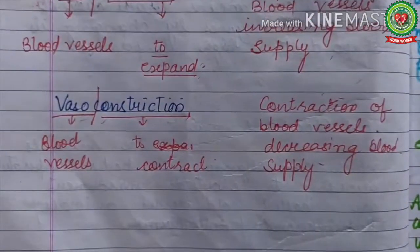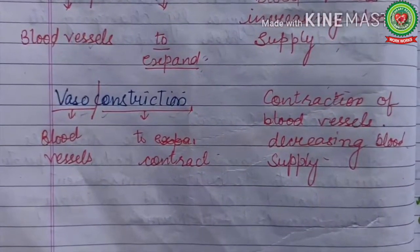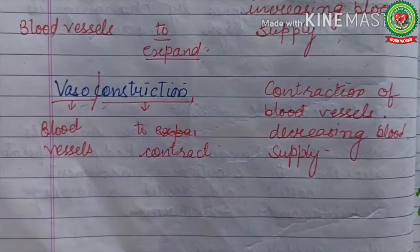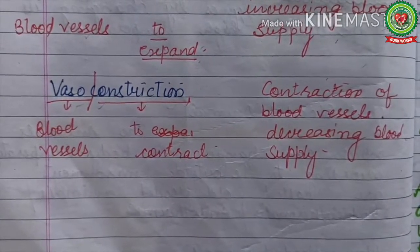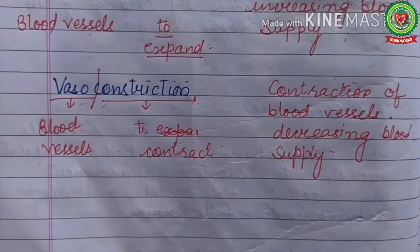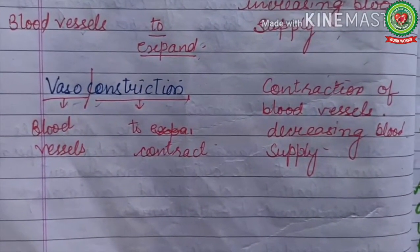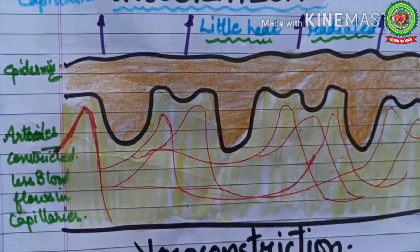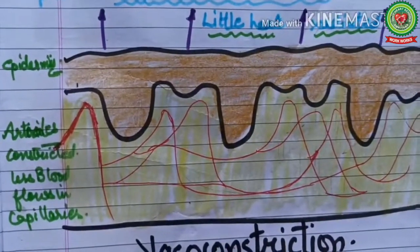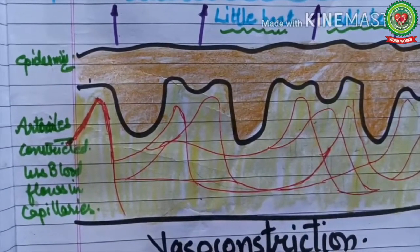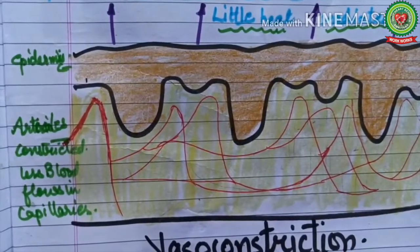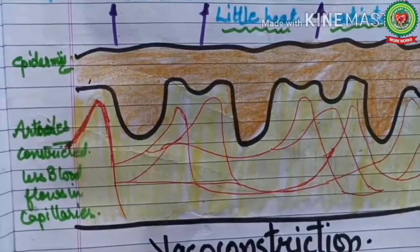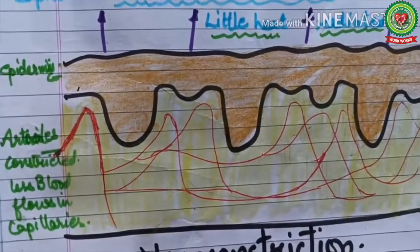Vasoconstriction: vaso means blood vessel, constriction means to contract. Vasoconstriction is a process in which blood vessels contract, resulting in decreased blood supply. The blood vessels become very narrow, so less blood flows towards the surface of the skin and minimum heat is lost in the form of sweat — that is, heat is retained inside the body.